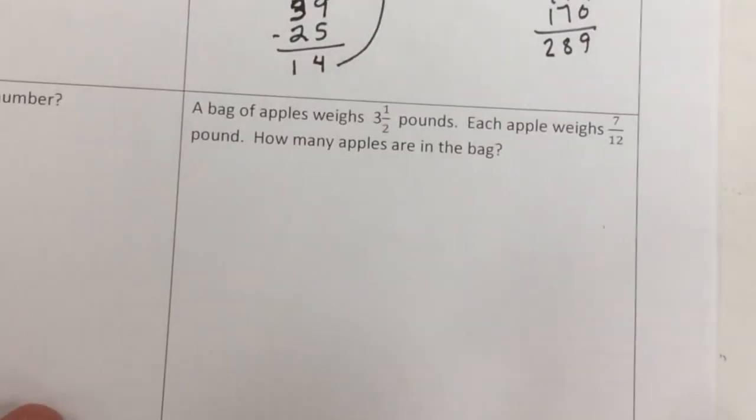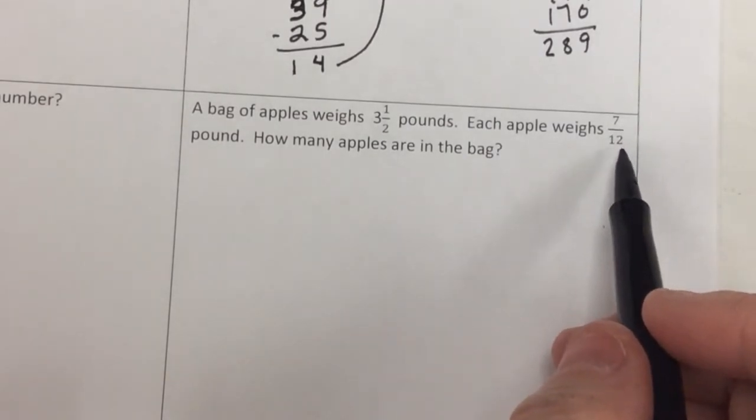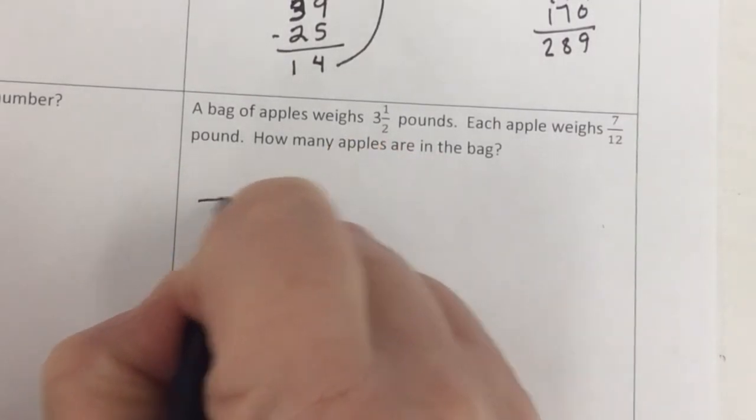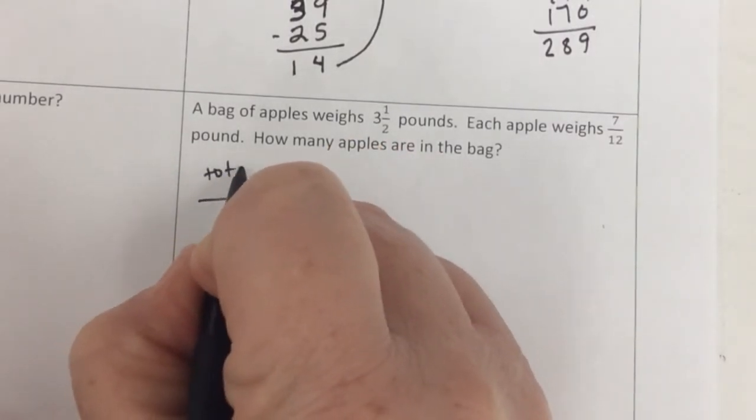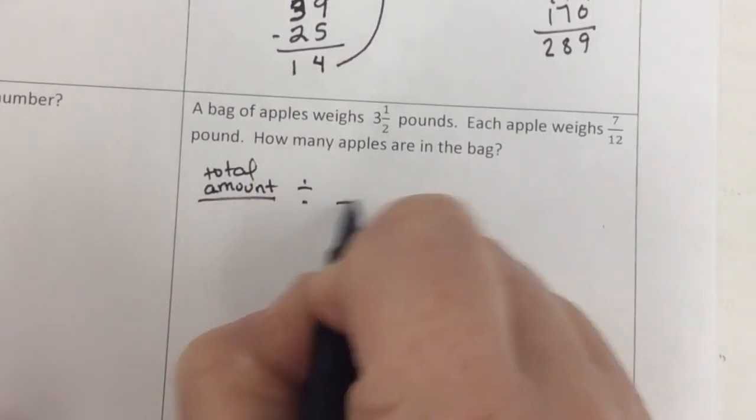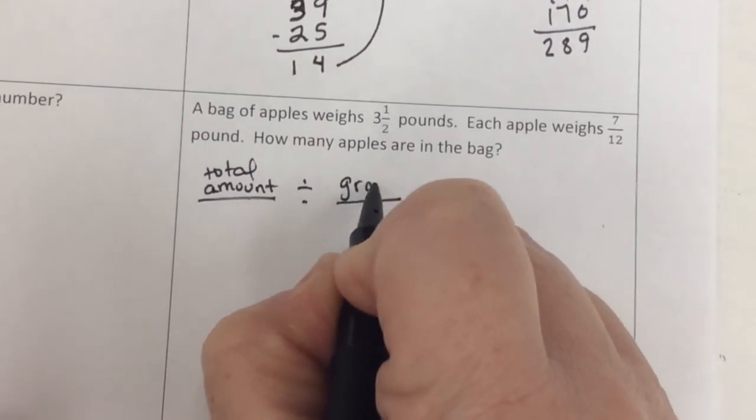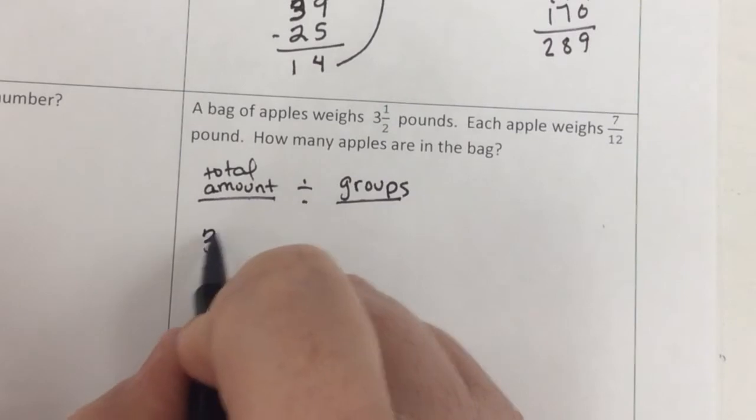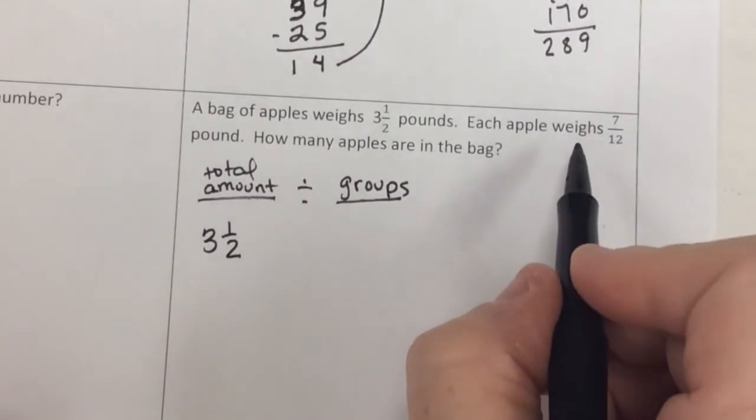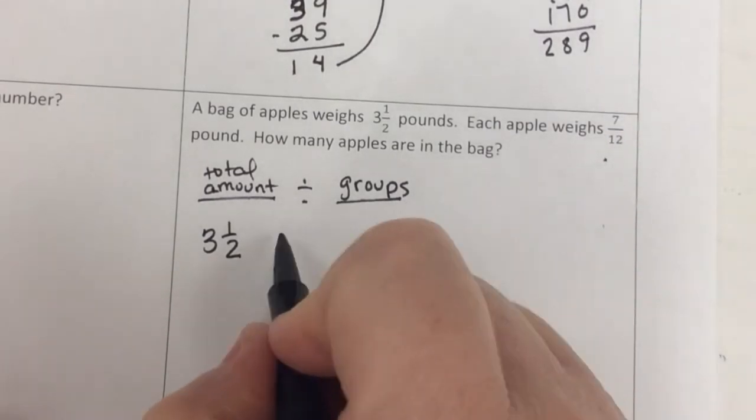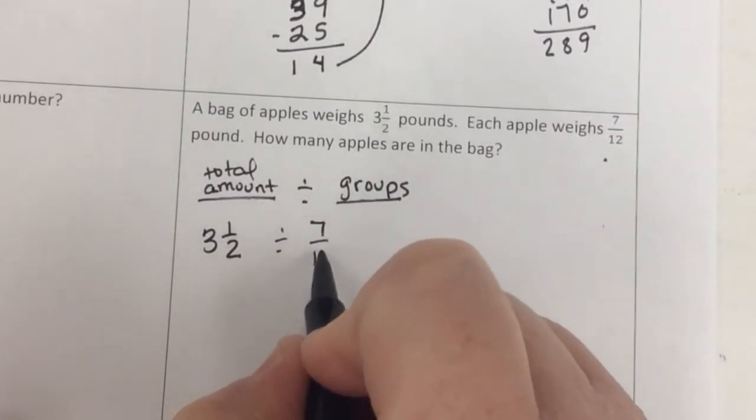A bag of apples weighs 3 1/2 pounds. Each apple weighs 7/12 of a pound. How many apples are in the bag? So remember, I need the total amount to be shared divided by how I'm grouping it. My groups. Now my total amount to be shared here is 3 1/2 pounds of apples, and I'm sharing it, I'm splitting it up into equal parts that are each 7/12 of a pound.